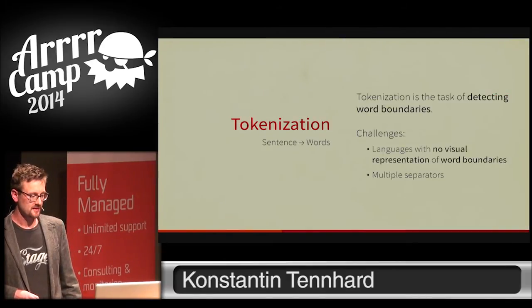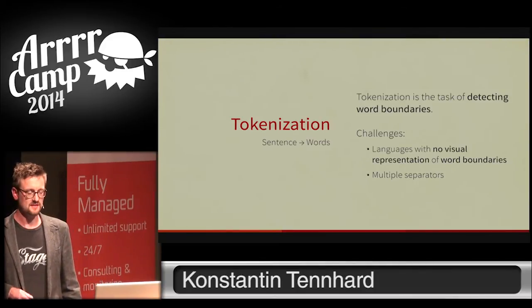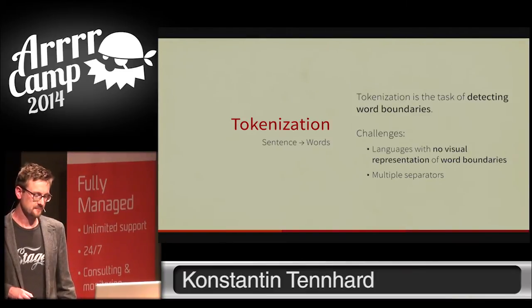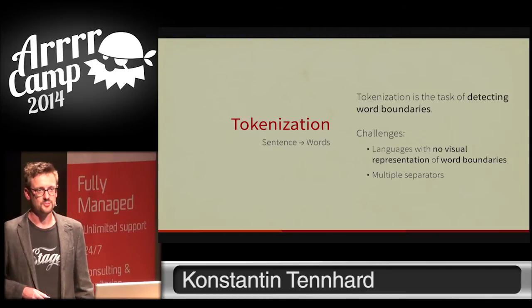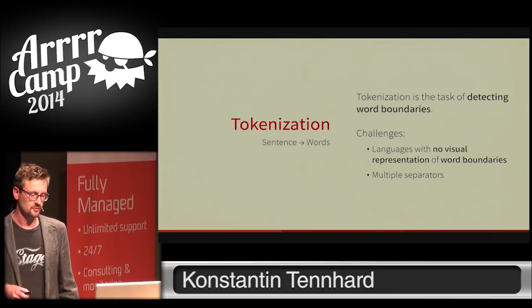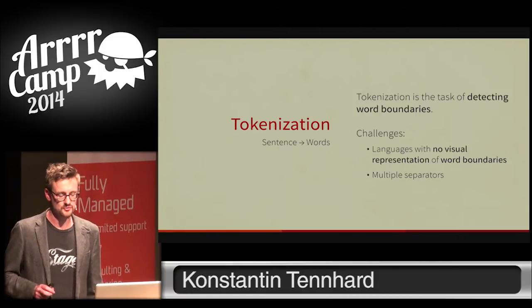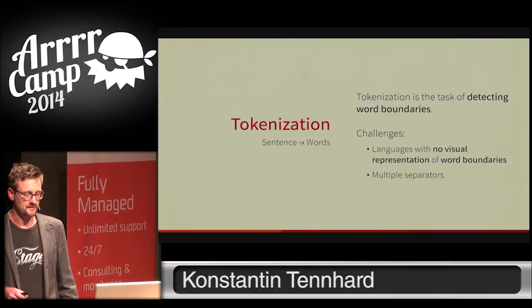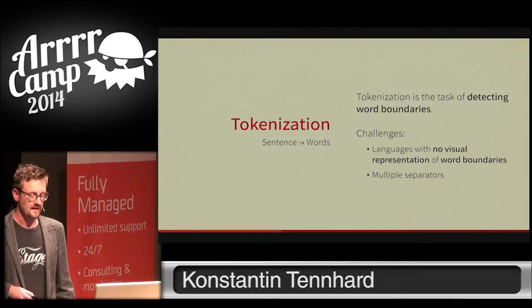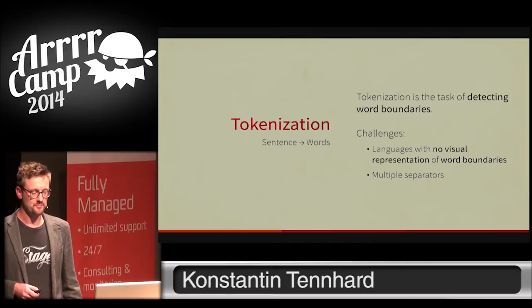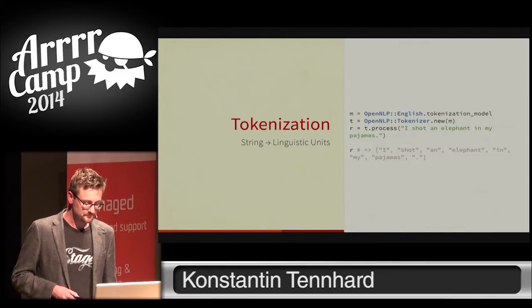The second instance is tokenization, which deals with detecting word boundaries. You might think this is even easier than sentence splitting, but even in English there are less obvious cases. If you think of contracted forms like 'won't', 'I am', or 'can't', these are actually two words but would be tokenized into one if you simply split on whitespace. There are also languages with multiple valid word boundaries or no visual word boundary at all, so using a machine learning algorithm is a better choice.